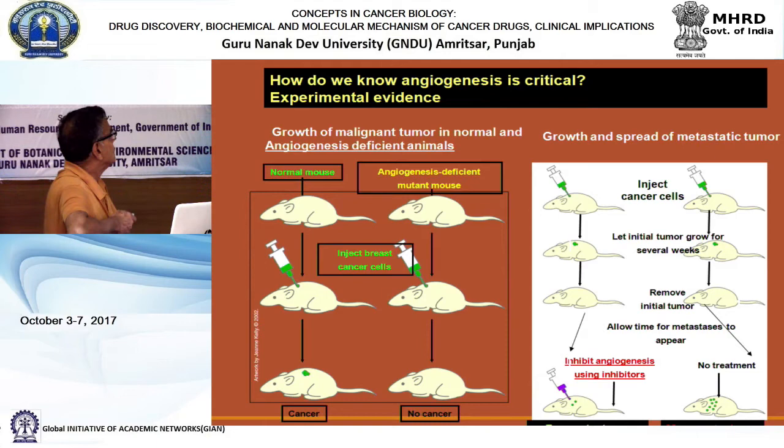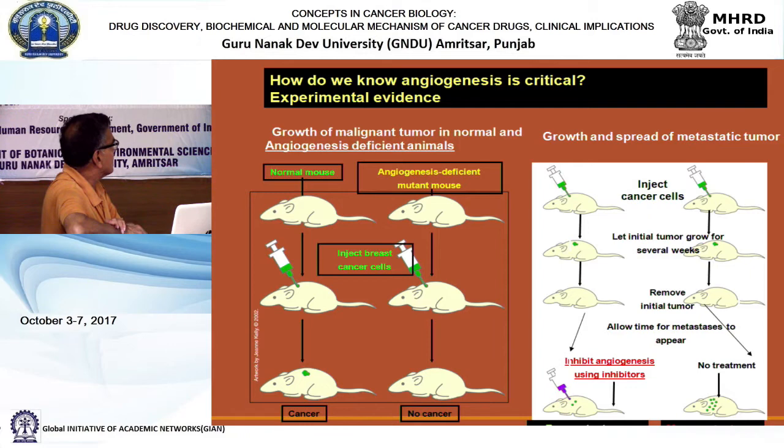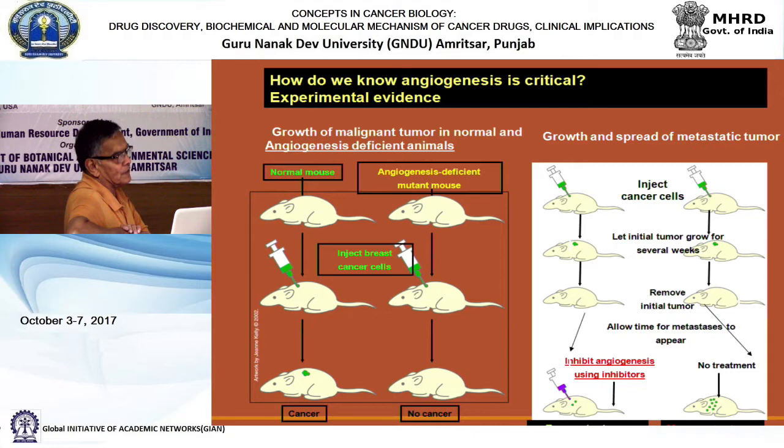Experimentally, if you inject cancer cells into a normal mouse, a tumor develops after some time. In an angiogenesis-deficient mutant mouse, no cancer develops. This is an important proof that angiogenesis is essential for tumor formation.